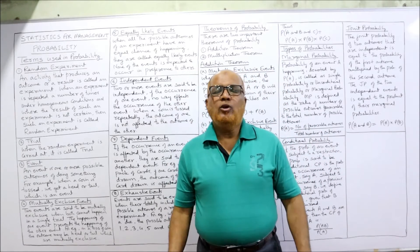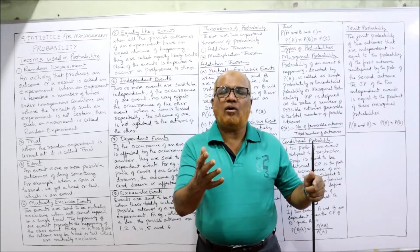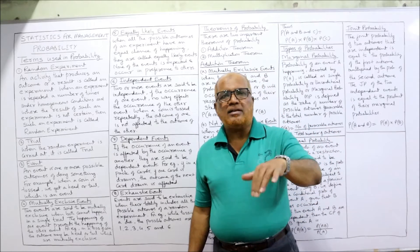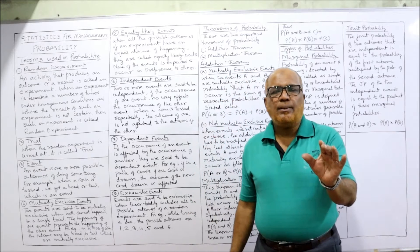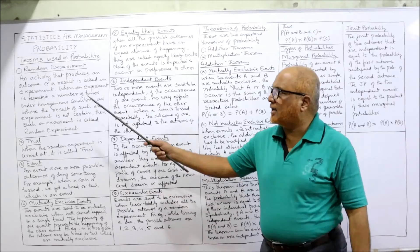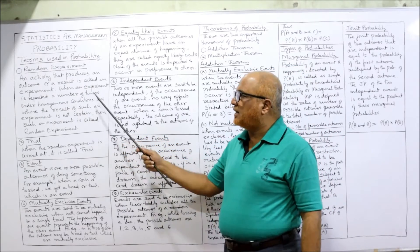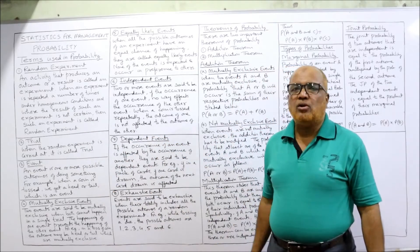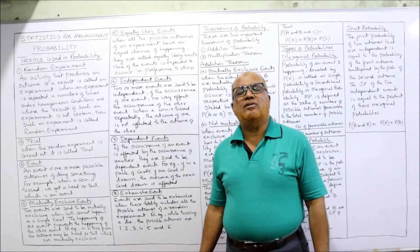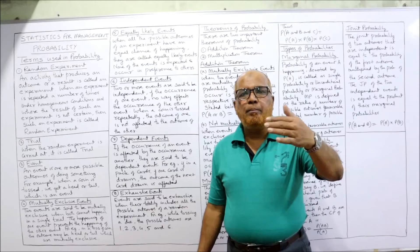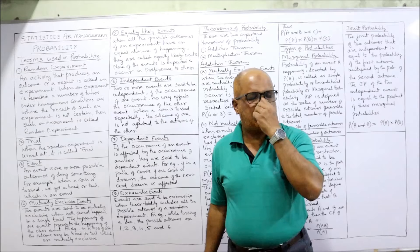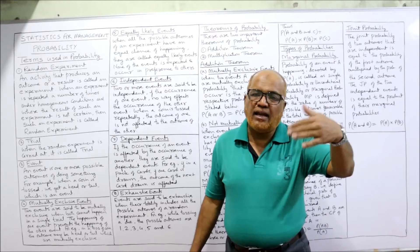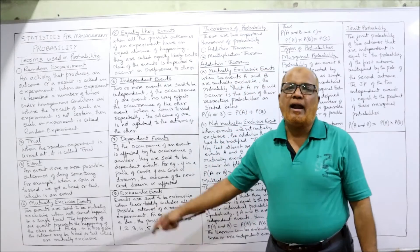Similarly, when you throw a die, you may get 1, 2, 3, 4, 5, or 6. When a student writes the examination, the result may be passing or failure. So any activity which produces some result is called an experiment. When the experiment is repeated a number of times under homogeneous conditions and the result is not certain, then such an experiment is called a random experiment — where the outcome is completely uncertain.